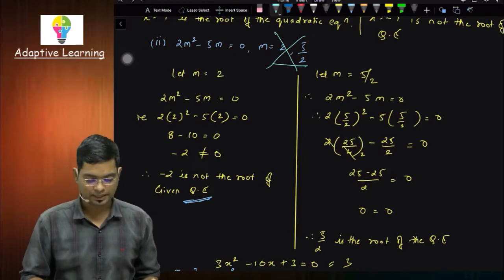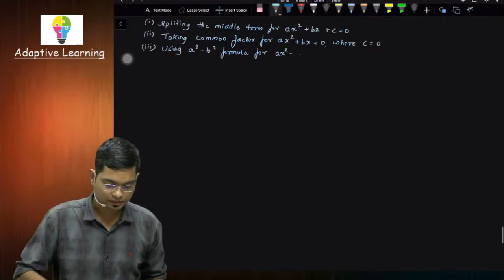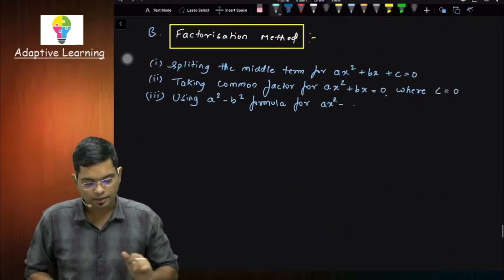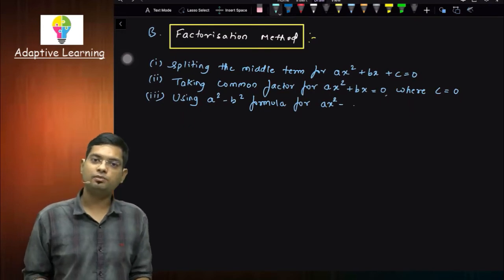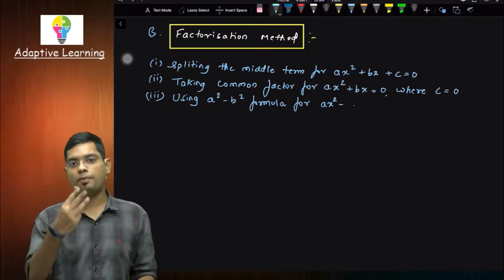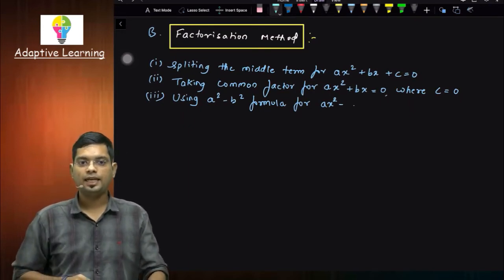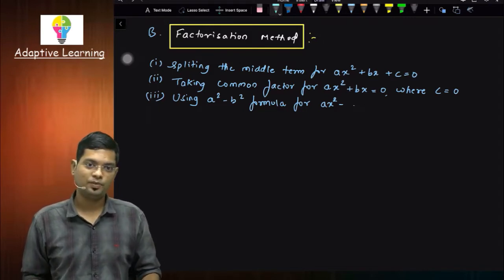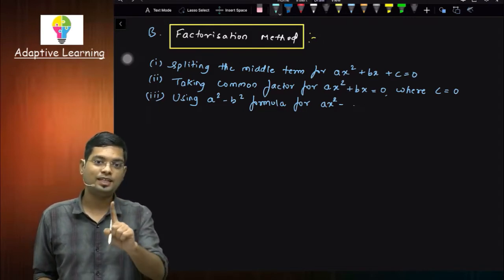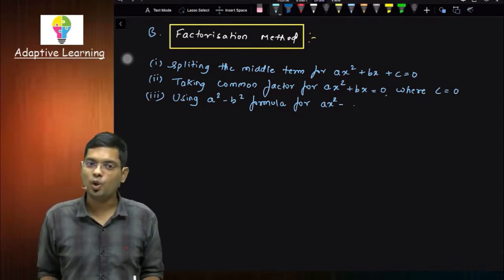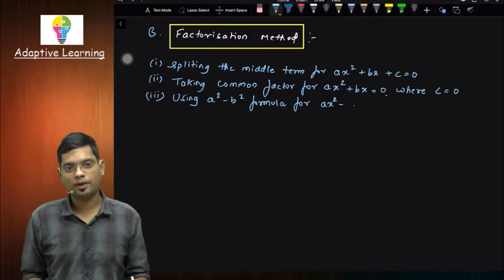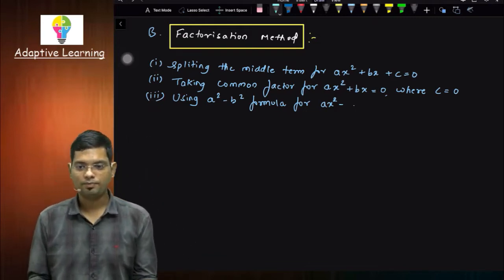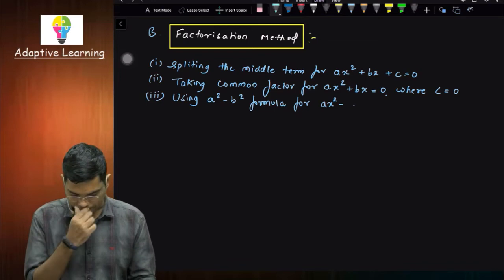Now let's talk about that — our part B. That is, factorization method. Now there are three ways. One is the first one: splitting the middle term. This has also been studied in the 8th standard. Splitting the middle term — what do we do here? We will go ahead and do our sum solve. First let's take an example.